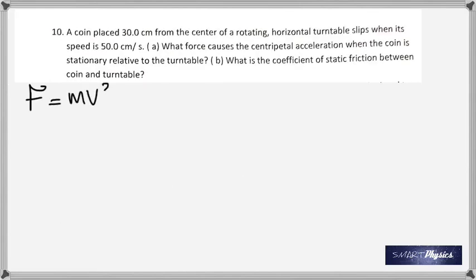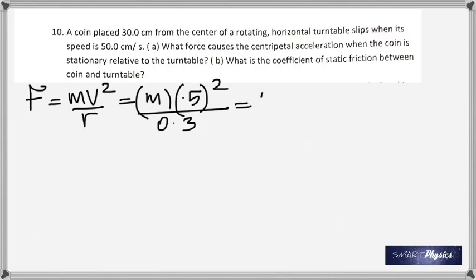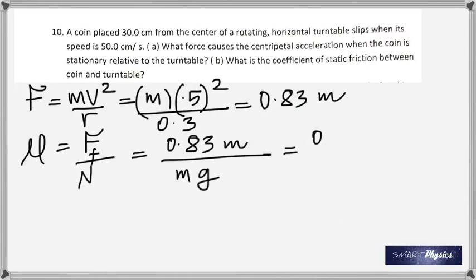Number 10. A coin is placed 30 centimeters from the center of a rotating turntable. What force causes the centripetal acceleration and what is the coefficient of static friction? Centripetal force is mv squared by r. Velocity is given, and you've got to change it into meters. Distance from the center, 30 centimeters, changed into meters. This is 0.83 times the mass. Remember this is not meters, it's a mass. Coefficient of friction is frictional force by the normal reaction. The normal reaction in this case is mg because it's a flat surface. The masses get cancelled and you get the coefficient of friction as 0.085, no unit.